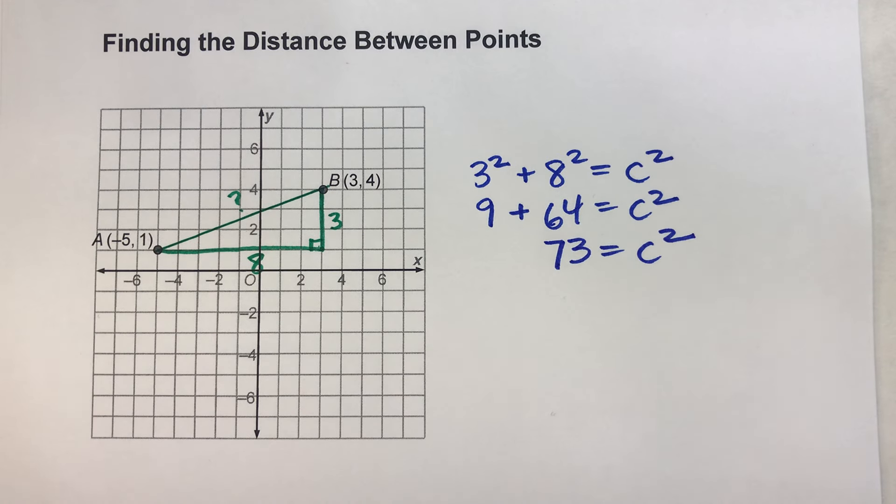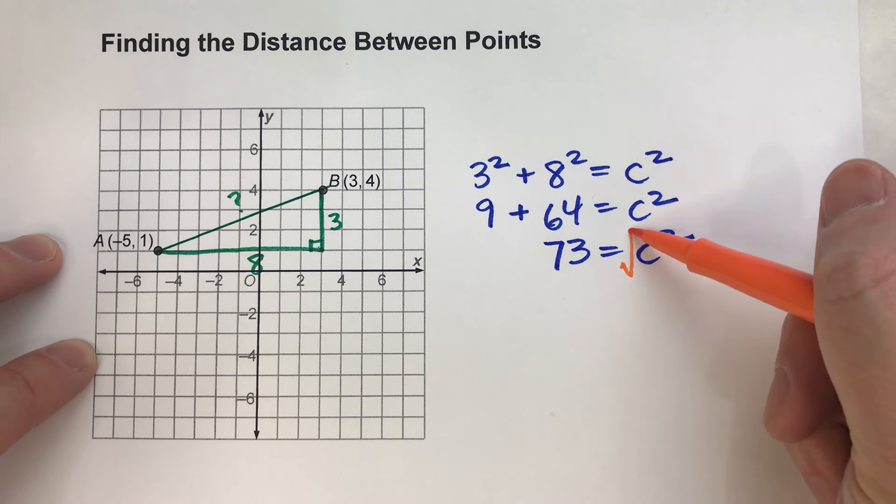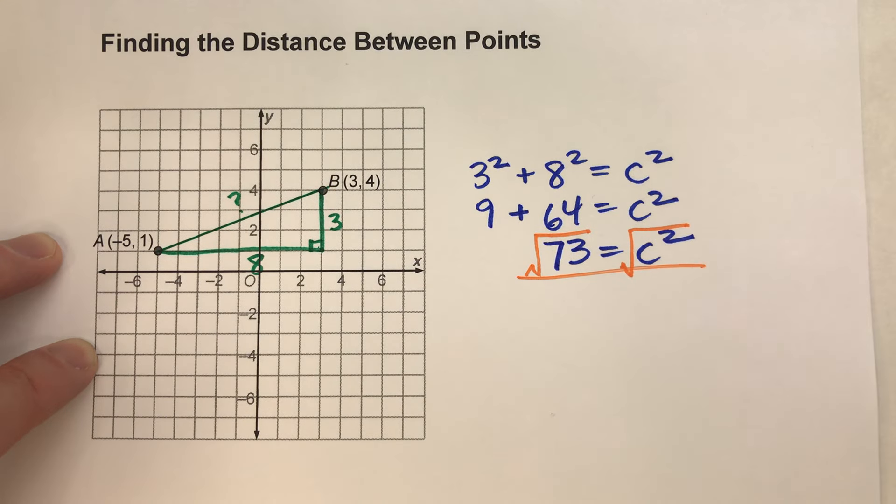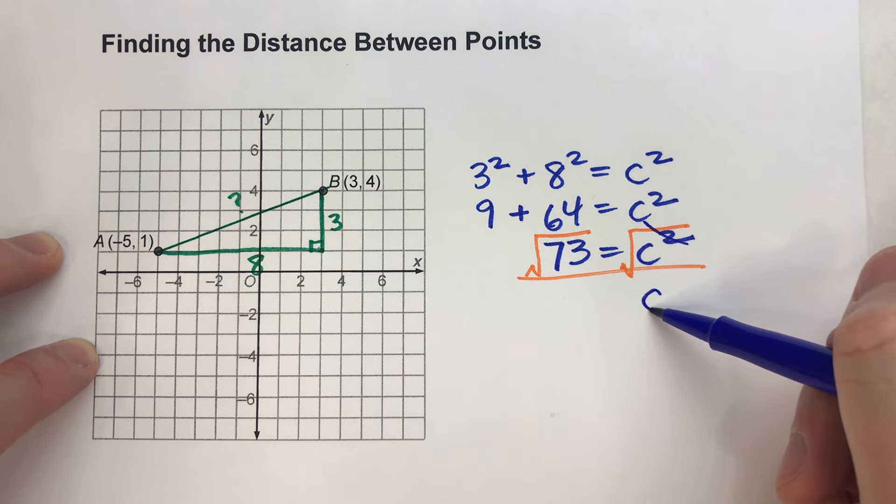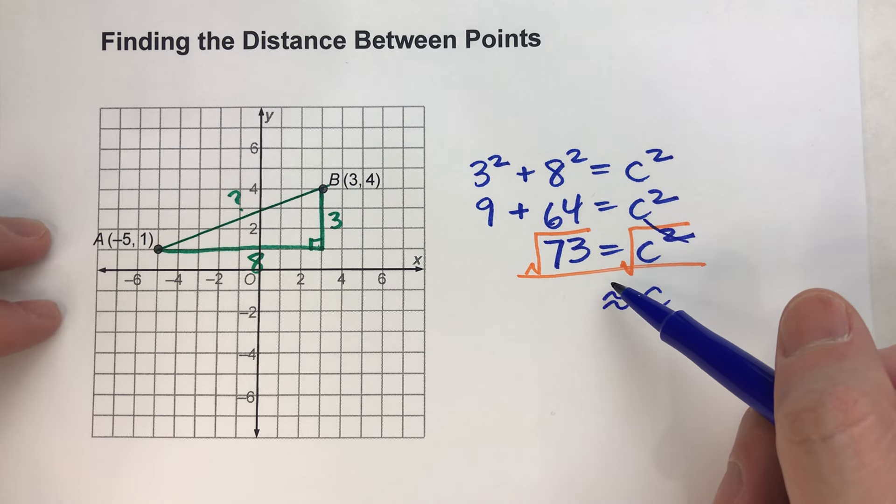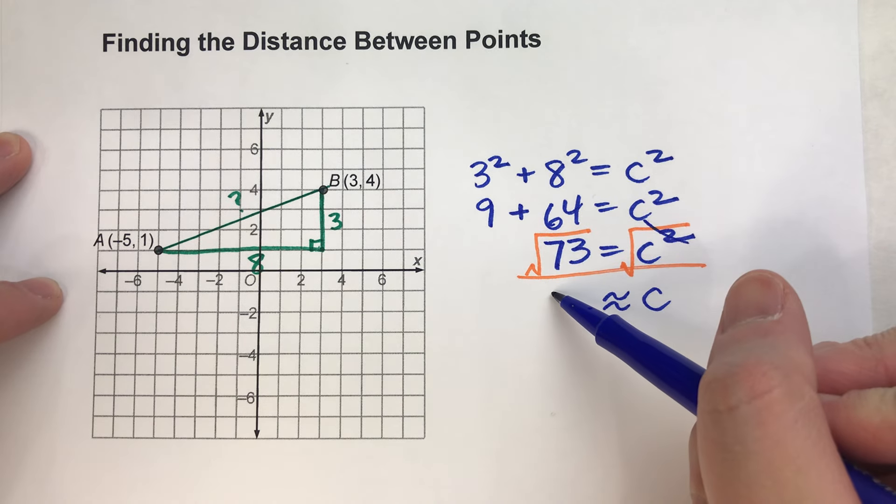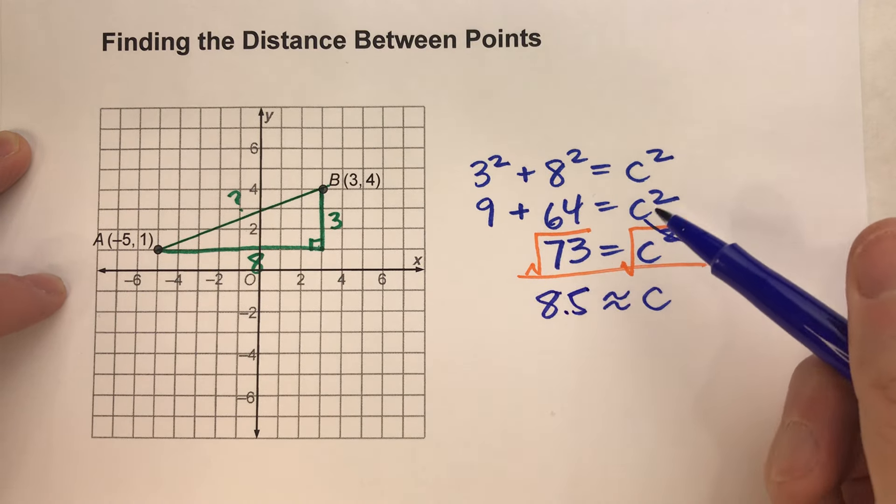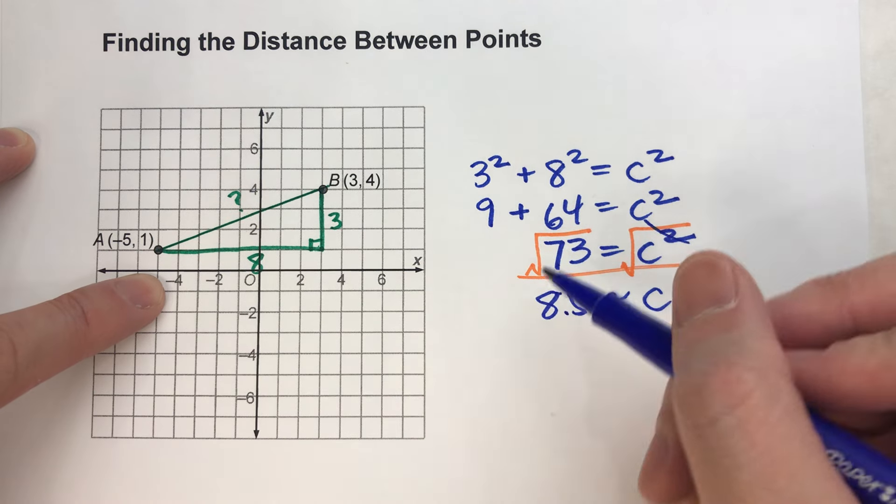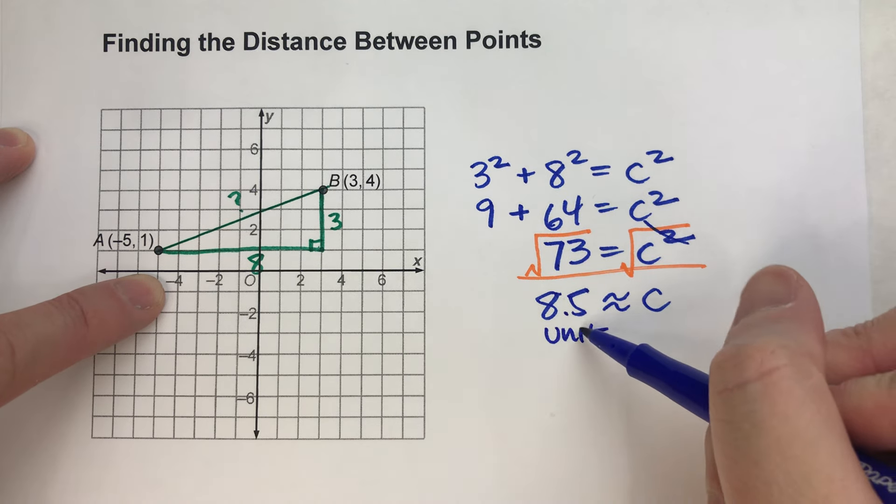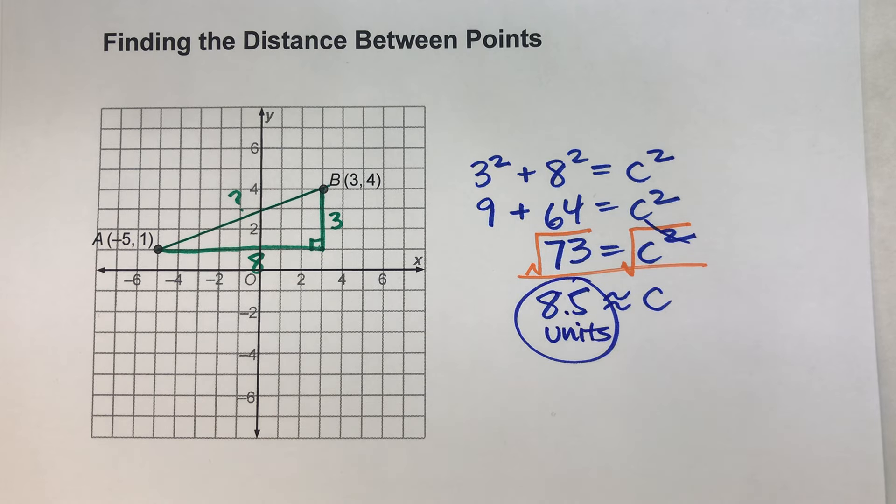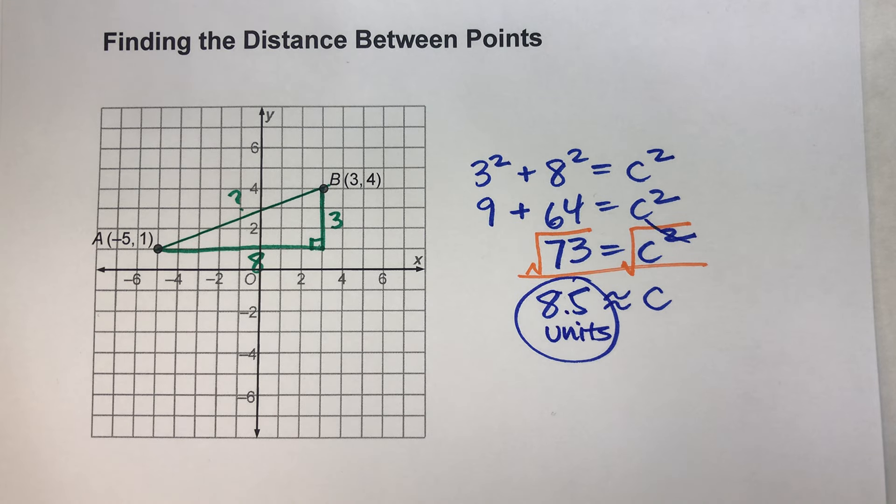Add these together, that gets me 73. And if I want to solve for C, I'm going to square root both sides. And I end up getting C is approximately, and the square root of 73 on my calculator is about 8.5. So this distance from point A to point B is about 8.5 units. So it's pretty easy there.